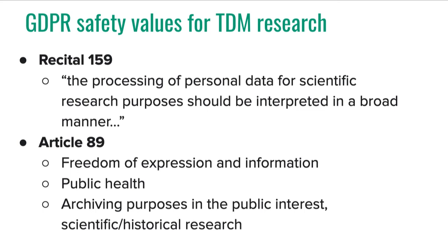At the same time, there are important limitations and exceptions to the rules that can provide a safety valve for particular types of activities. For example, Article 17 as well as Article 89 delve more deeply into the safeguards relating to processing for archiving purposes that are in the public interest, as well as for purposes of scientific, historical, and statistical research. These safeguards say that the GDPR provisions will not apply when certain circumstances arise — for example, for exercising the right of freedom of expression and information, for reasons of public interest in the areas of public health, for archiving purposes related to scientific, historical, and statistical research, and for the establishment, exercise, or defense of legal claims.